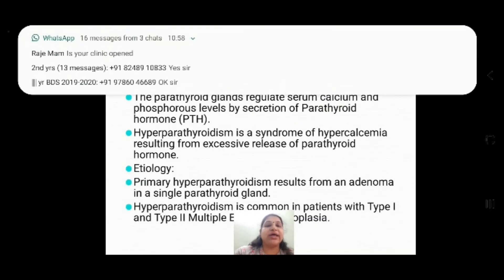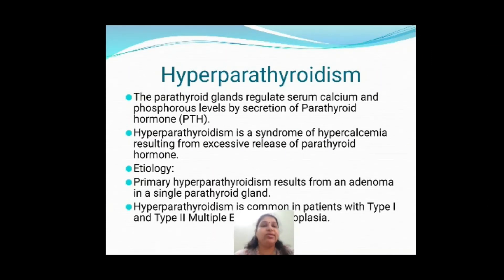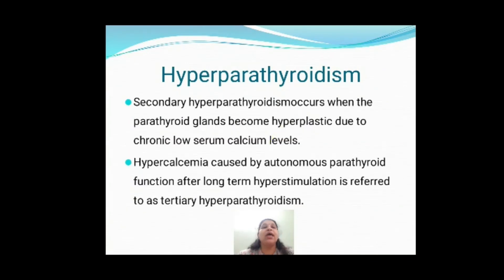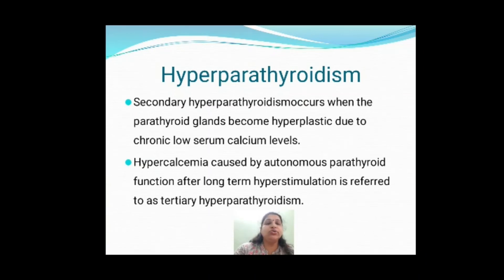Hyperparathyroidism: the parathyroid glands regulate serum calcium and phosphorus levels by secreting parathyroid hormone. Hyperparathyroidism is a syndrome of hypercalcemia due to excessive secretion of parathyroid hormone. Primary hyperparathyroidism occurs due to an adenoma or tumor in the parathyroid gland, and is very common in patients with type 1 and type 2 MEN syndrome — multiple endocrine neoplasia. Secondary hyperparathyroidism occurs due to hyperplasia of the parathyroid glands from chronically low serum calcium levels. Tertiary hyperparathyroidism is caused by autonomous parathyroid function due to long-term hyperstimulation.